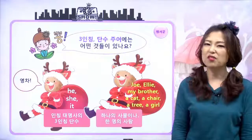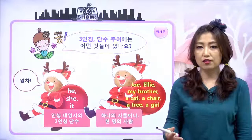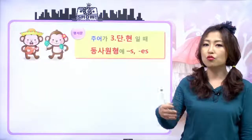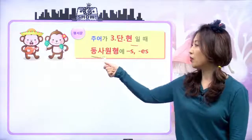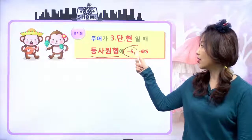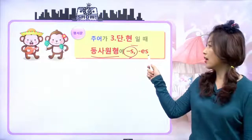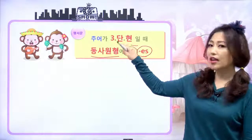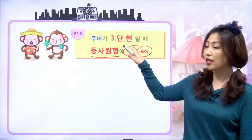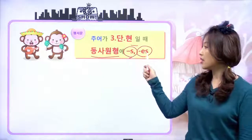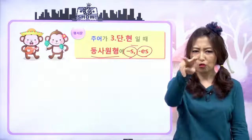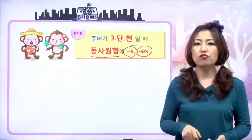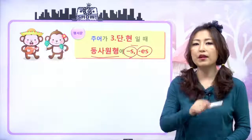동사에 변화가 생긴다. 우리 동사는 변신하는 아이잖아요. 원래도 변신한다고 했었어요. 3단 변신한다고 했었죠? 그래서 주어가 3단현일 때 동사에 어떤 변화가 일어나냐 하면, 동사에는 s나 es가 붙는다. 주어가 3인칭 단수 현재 시제일 때 우리가 동사 원형에 s나 es를 붙인다. 그래서 눈으로만 봐도 아, 이것은 현재 시제구나, 이건 주어가 3인칭 단수구나를 단박에 알아낼 수 있는 거예요.